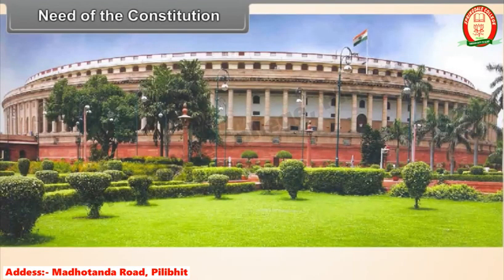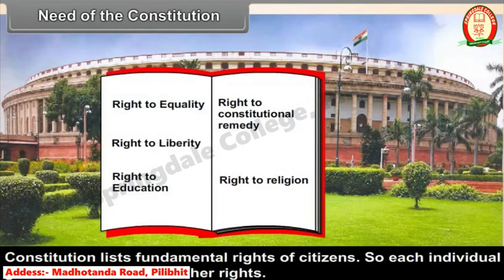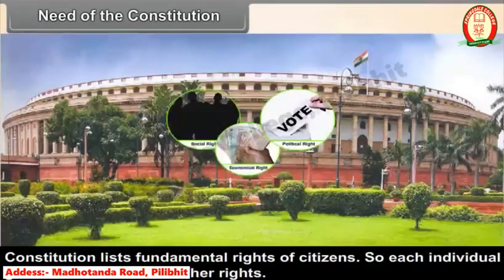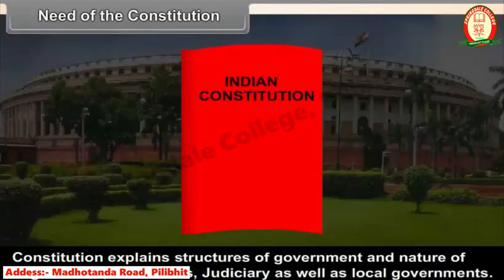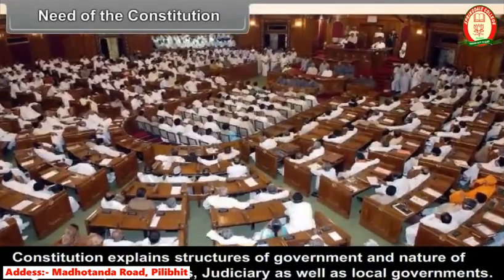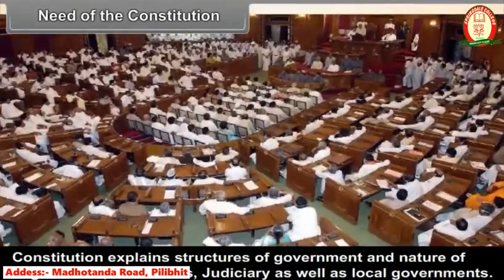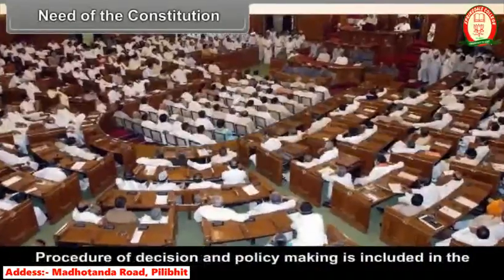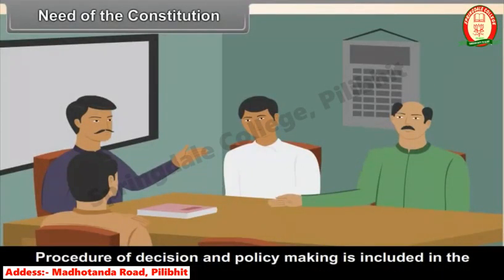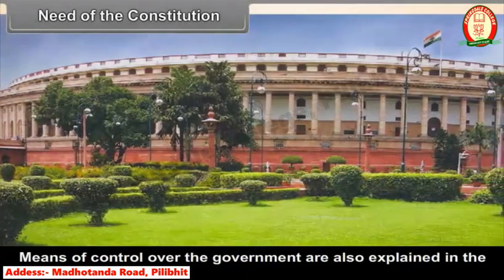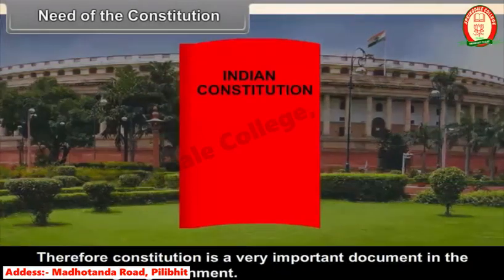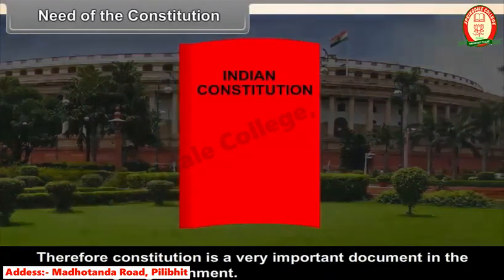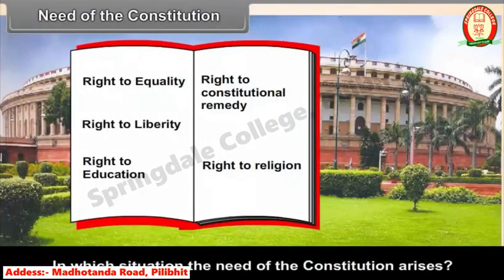Need of the Constitution. The Constitution lists the fundamental rights of citizens, so each individual gets a clear idea about his or her rights. It explains the structures of government and the nature of the legislature, executive, judiciary, and local governments. The procedure of decision and policy making is included in the Constitution. Means of control over the government are also explained. Therefore, the Constitution is a very important document in the functioning of government.